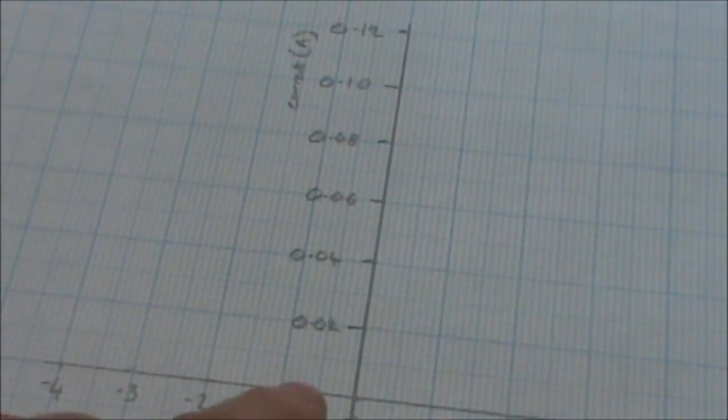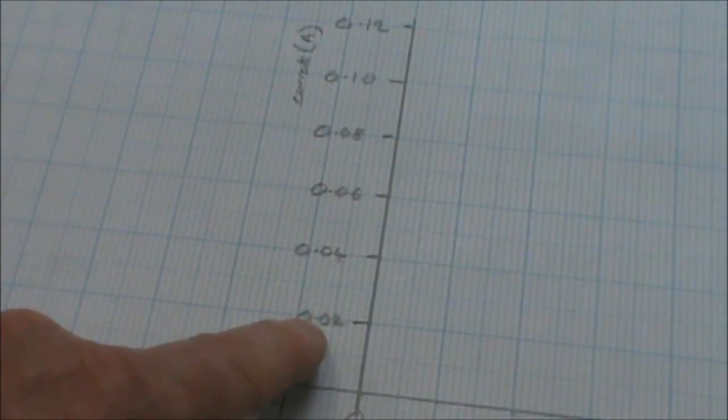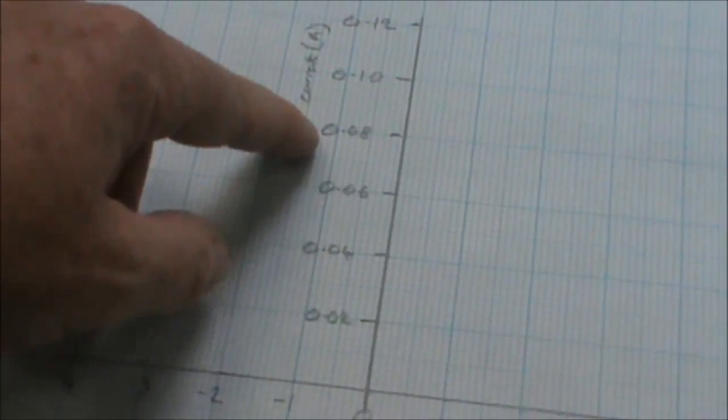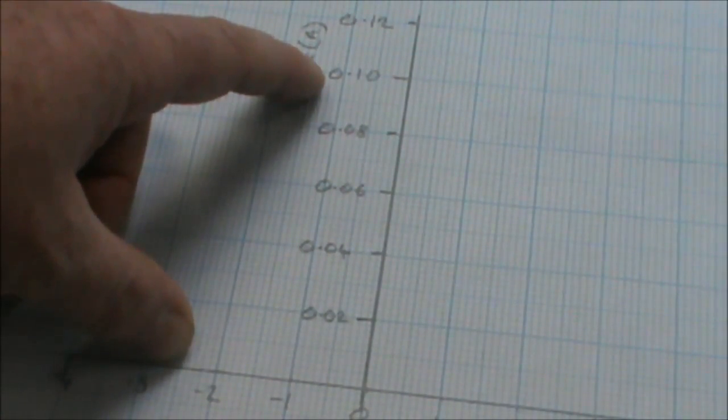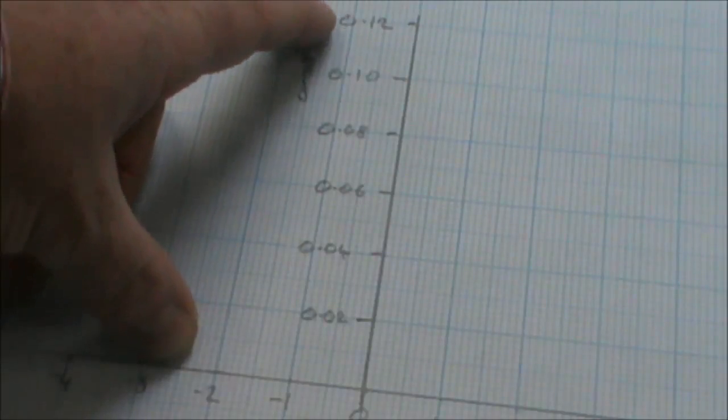Notice on the current, I've gone up in 0.02s, 0.02, 0.04, 0.06, 0.08, and at 0.08 it then goes to 0.1, and then 0.12.